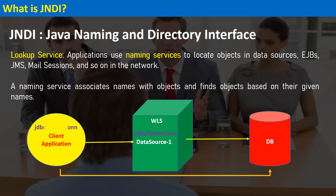When I configure my data source, that JNDI name is also defined in the application. So when the application needs to connect with the data source, it will contact the WebLogic server, look up the JNDI of that particular data source, and once connected, it will get the connection from the data source assigned to that JNDI.